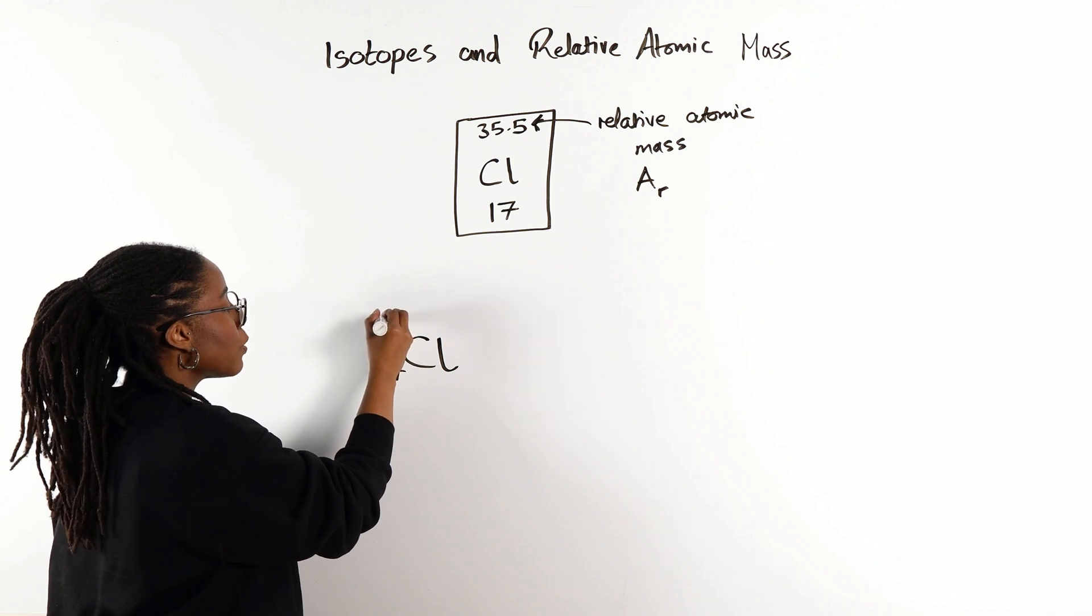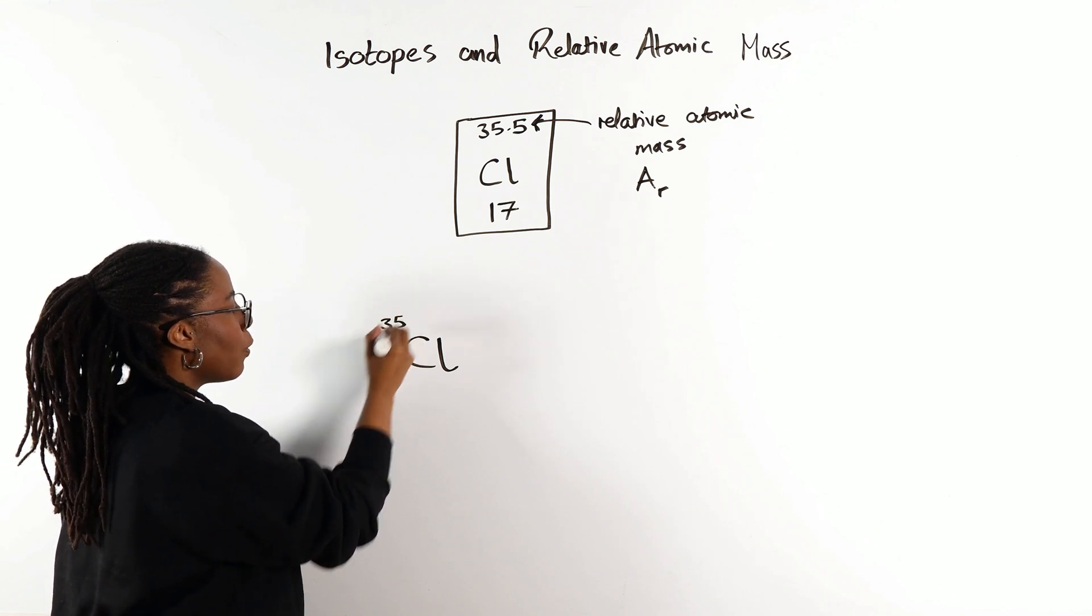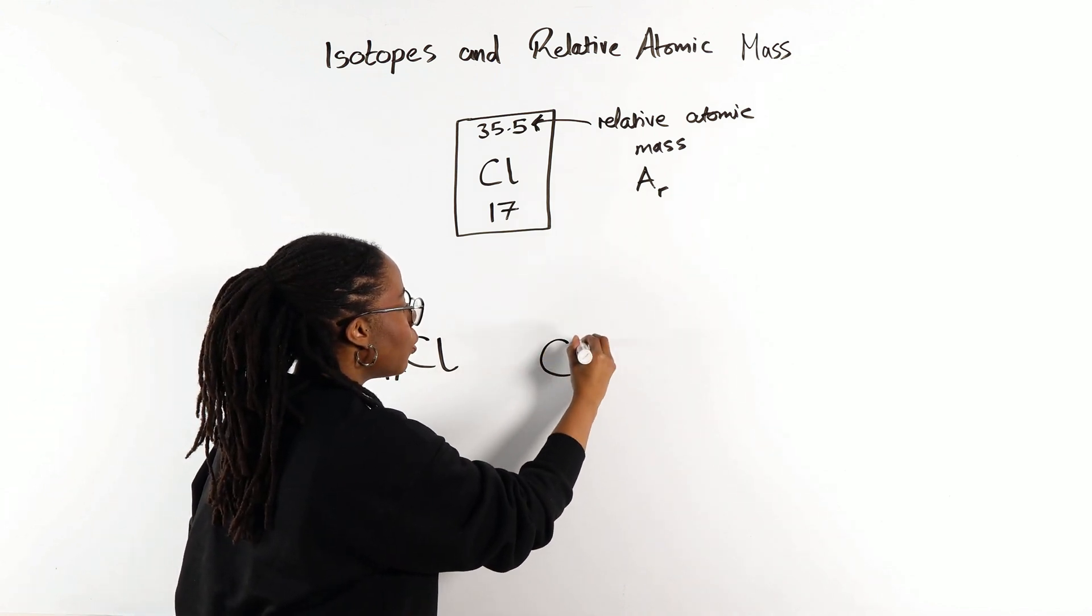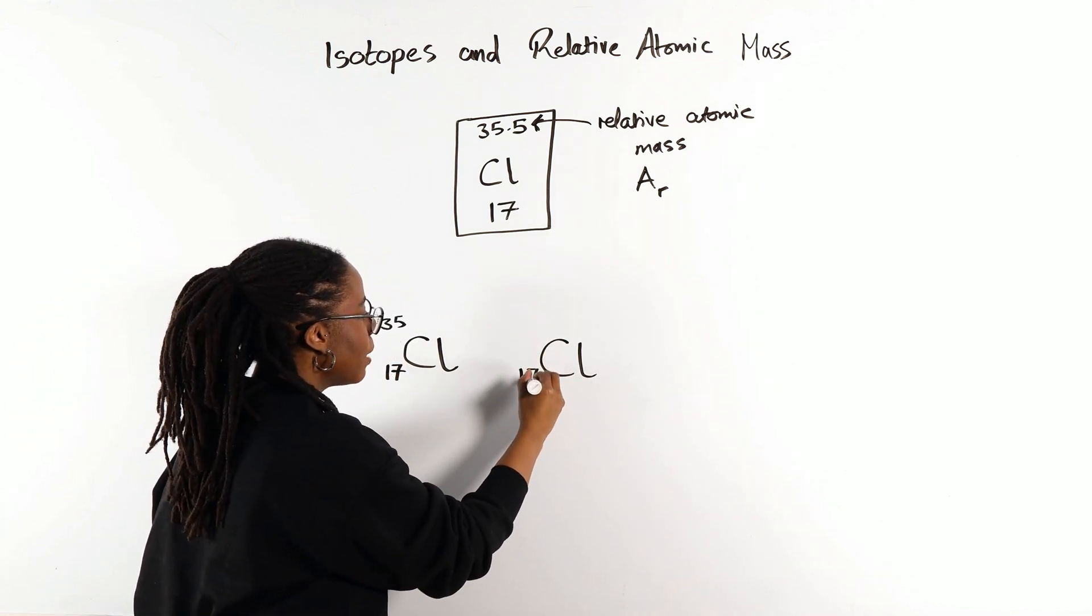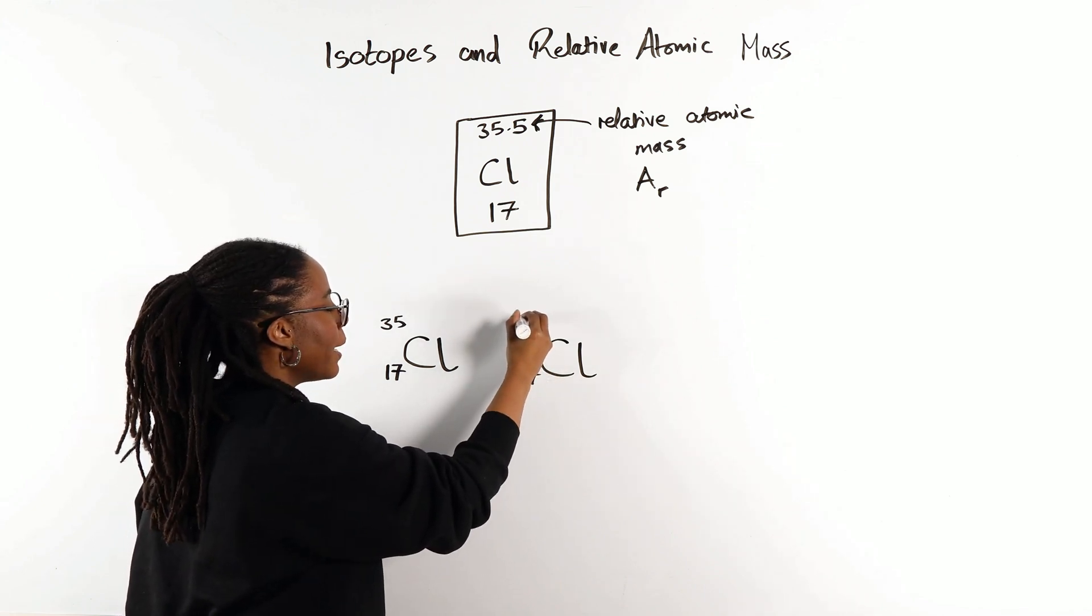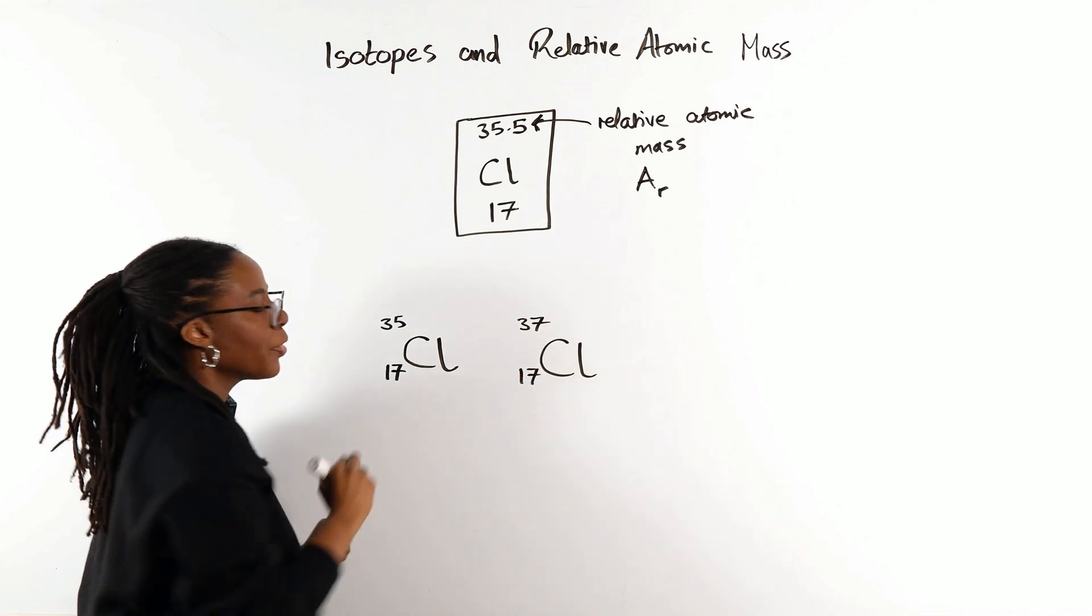Because all chlorine atoms have got the same number of protons. There are some forms of chlorine with a mass number of 35. And then there are other forms of chlorine, again, same number of protons, of course, but instead with a mass number of 37.